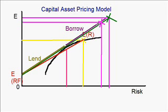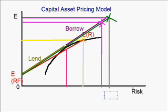You can find this derivation in many websites, so I'm not going to dig into the detail. But here I would like to show you how to conceptually derive the security market line and also the capital asset pricing model. The most important thing of this derivation, again, is that you are only rewarded for bearing additional systematic risk instead of the non-systematic risk.